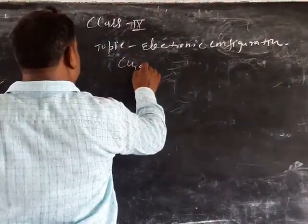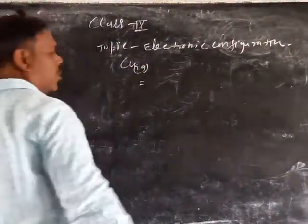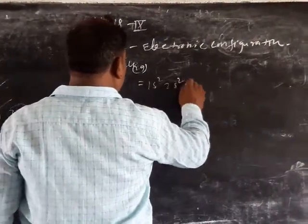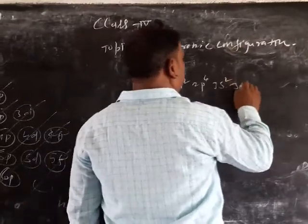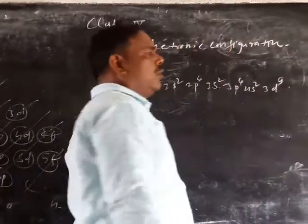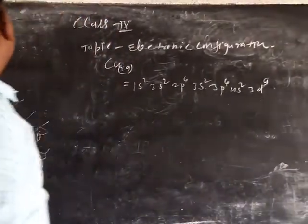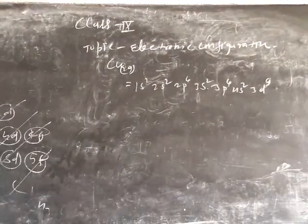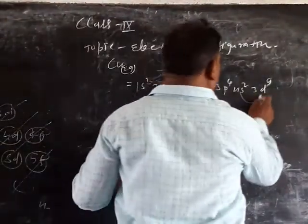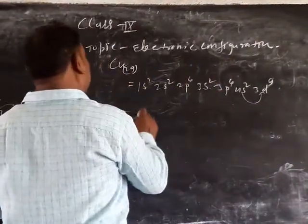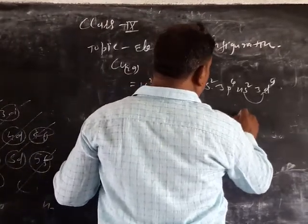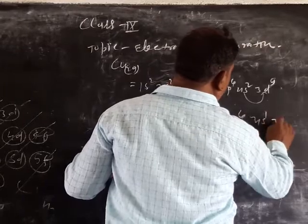CU29, the electronic configuration of 29: 1S2, 2S2, 2P6, 3S2, 3P6, 4S2, 3P9. You have got D9, D9 mag unit, D10 by whole D: 1S2, 1P6, 3S2, 3P6, 4S1.